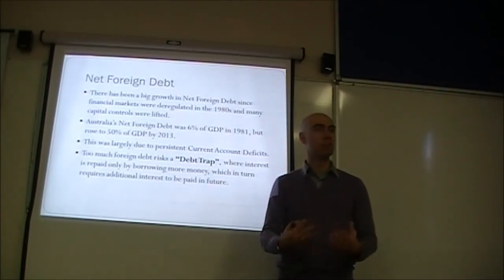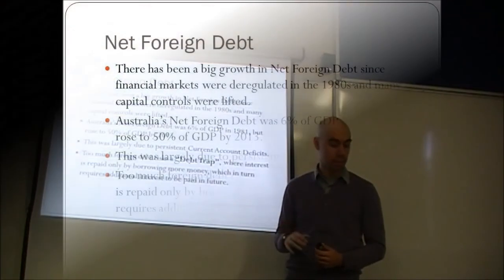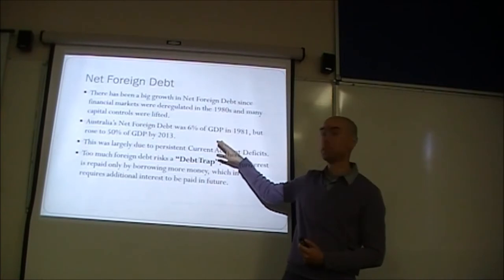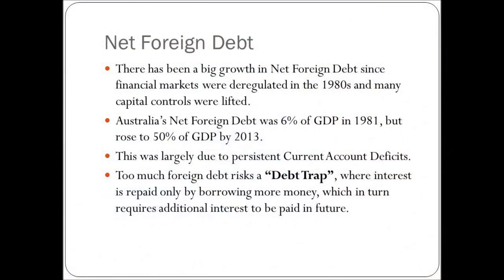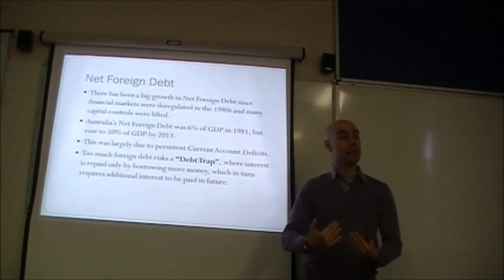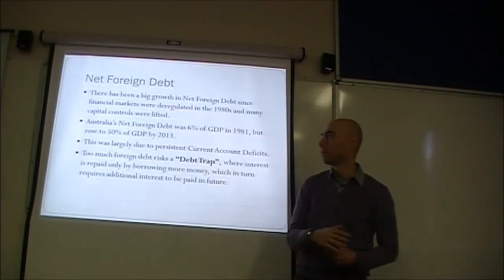The movement of goods and services still faces some barriers, and the movement of workers through migration faces very high barriers, but the movement of money has very few barriers today. Australia's net foreign debt was 6% of GDP in 1981 and rose to 50% of GDP by 2013 — a massive increase. This was largely due to persistent current account deficits since the mid-1970s, which required Australia to borrow money — primarily in the form of debt — resulting in interest payments that added to further debt.